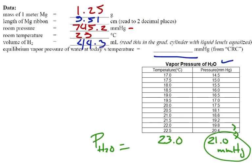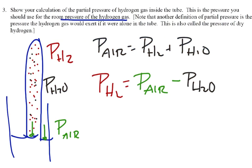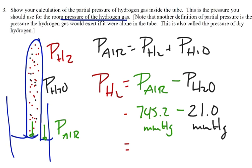So that's going to be equal to the pressure due to the air minus the pressure due to the water vapor. Now going back to our data, the pressure due to the air is 745.2, and that's millimeters of mercury. And the pressure due to the water we saw there was 21.0. And we got that from our chart. And I'm going to take a moment here and calculate that. So what we're going to end up with is 724.2 millimeters of mercury.